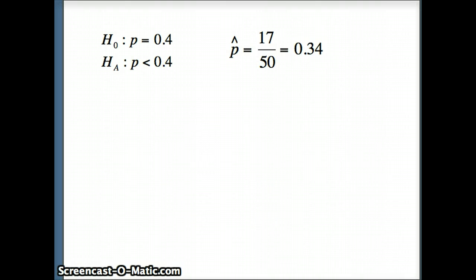So we want to go ahead and compute our test statistic. The test statistic here is z. z is p-hat minus p, divided by the square root of pq over N. p-hat, 0.34, minus p. p is 0.4, the number we are using in our null hypothesis.